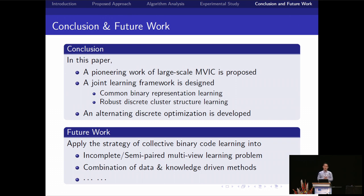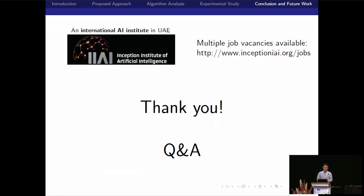In this paper, we proposed a pioneering work on large-scale multi-view image clustering. We use binary codes to minimize the computing complexity and the memory overhead. A joint learning framework is done and alternating discrete optimization is developed. In the future, we may use the correct binary code learning framework for other problems. MBZUAI is the first international AI institute in UAE. We have a booth on the second floor. If you're interested in our work, our research, our institute, you can go to the booth. We have leaders over there. You can consult them. Thank you very much.